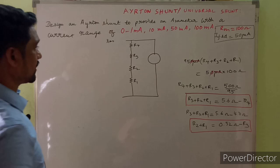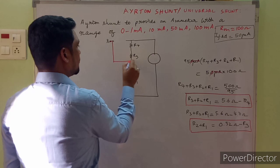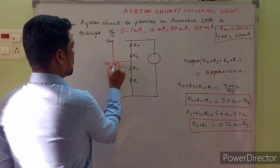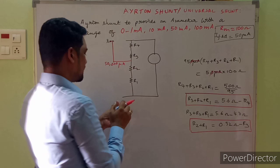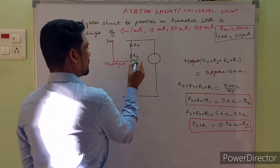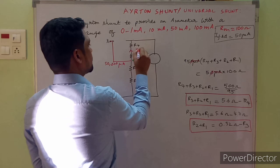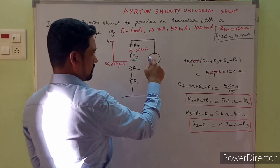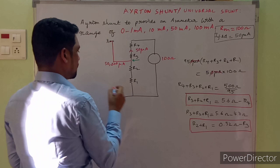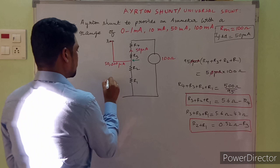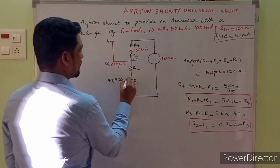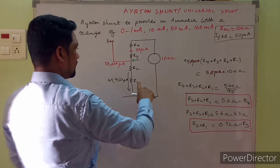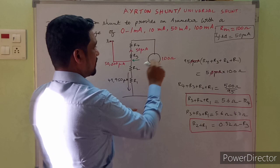For the third range, the switch moves to the new position. 50,000 micro amperes flows in total. After this node, 50 micro amperes must flow through the basic meter. The leftover is 49,950 micro amperes flowing through the shunt side. The shunt side resistances R2 and R1 are in series.